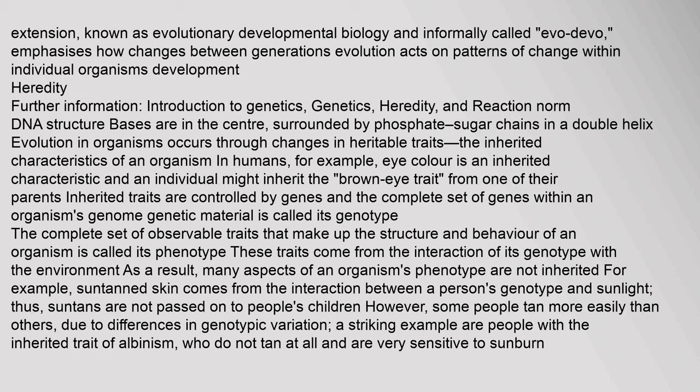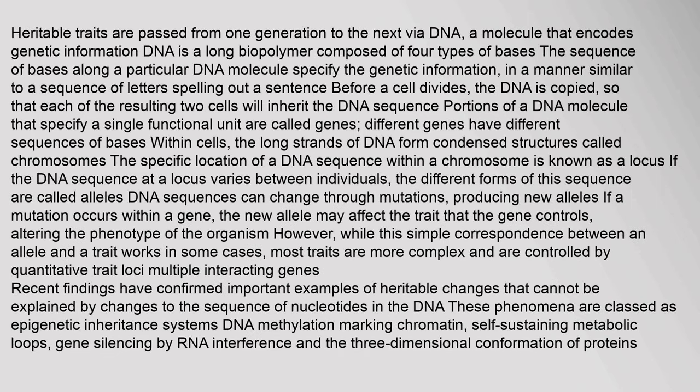The complete set of observable traits that make up the structure and behavior of an organism is called its phenotype. These traits come from the interaction of its genotype with the environment, so many aspects of an organism's phenotype are not inherited. For example, suntanned skin comes from the interaction between a person's genotype and sunlight — thus suntans are not passed on to children. However, some people tan more easily than others due to genotypic variation. A striking example are people with the inherited trait of albinism, who do not tan at all and are very sensitive to sunburn.